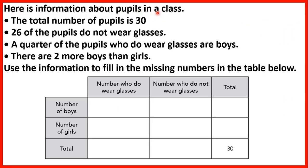Here is information about pupils in a class. The total number of pupils is 30, and 26 do not wear glasses. We have 30 total marked on the table. Since 26 do not wear glasses, subtracting 26 from 30 tells us that 4 children do wear glasses.